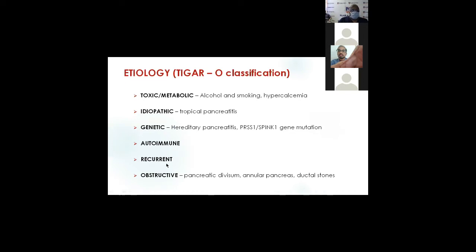Other etiologies include recurrent pancreatitis and obstructive pancreatitis due to abnormality in the drainage of the duct into the ampulla of Vater, or it can be an annular pancreas, or due to a predominant stone obstructing at the head or neck region, so that the rest of the gland is unable to drain.